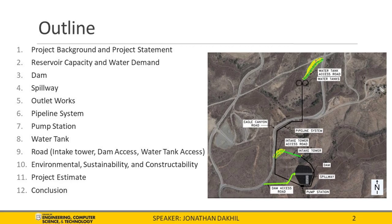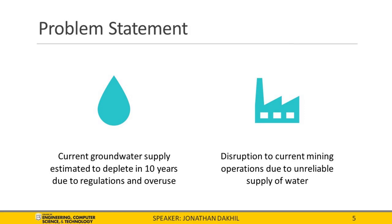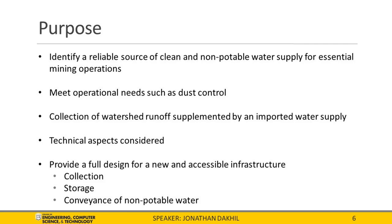We will begin by discussing the project background, problem statement, and the purpose of our presentation. The project is located in the city of Corona, within Riverside County, just west of Lake Matthews. The land consists of open space privately managed by mining companies, whose operations require water for mining of materials. They currently rely on a groundwater reservoir, which is estimated to deplete within the next 10 years due to regulations and overuse, causing disruptions to future mining operations. Our team has been tasked to identify a reliable source of clean, non-potable water supply to meet all operational needs such as dust control. The solution involves collection of watershed runoff supplemented by imported water supply, providing a full design for the collection, storage, and conveyance of non-potable water.